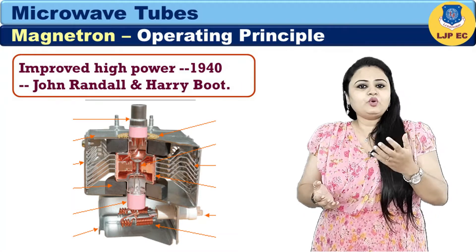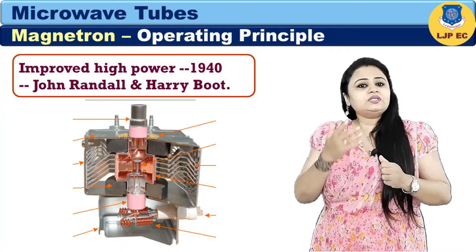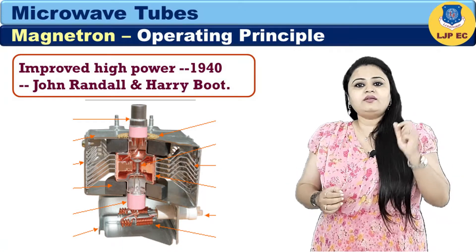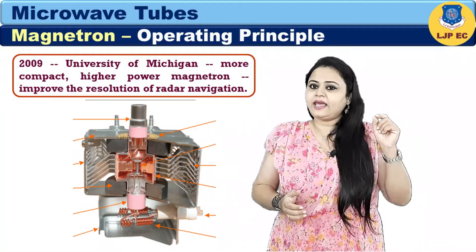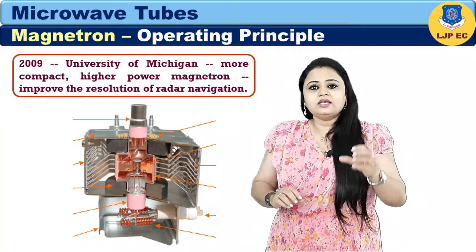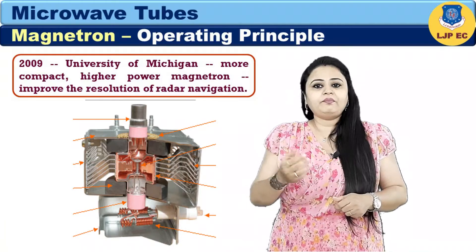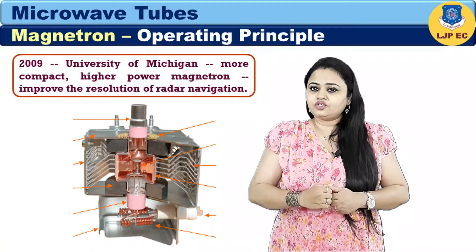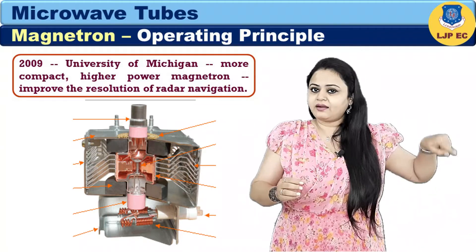However, an improved version — the high power cavity magnetron — was invented in 1940 by John Randall and Harry Boot. In 2009, University of Michigan researchers sponsored by the US Air Force announced the development of a more compact, higher power magnetron that could improve the resolution of radar navigation.